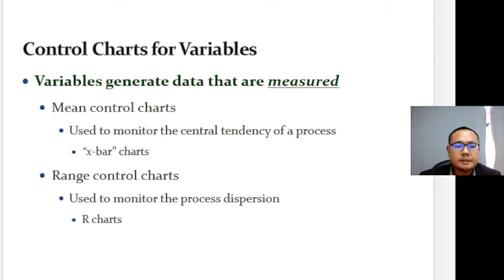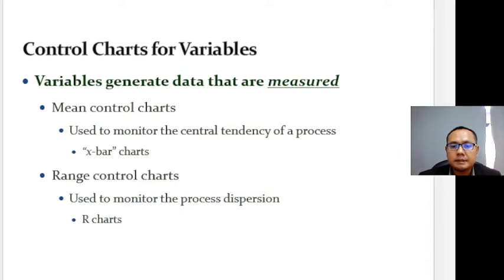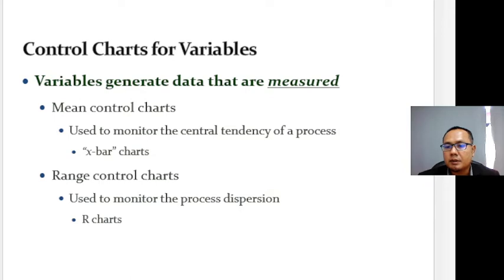Means and ranges are used to monitor variable control charts. The X-bar chart monitors the central tendency of a process, while range charts monitor the dispersion of the process.